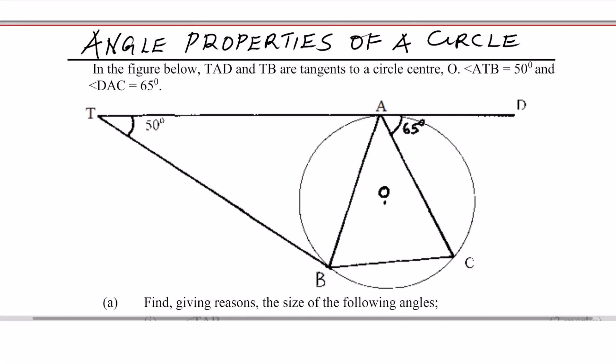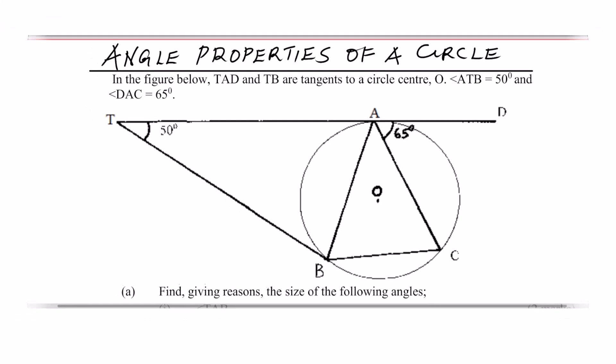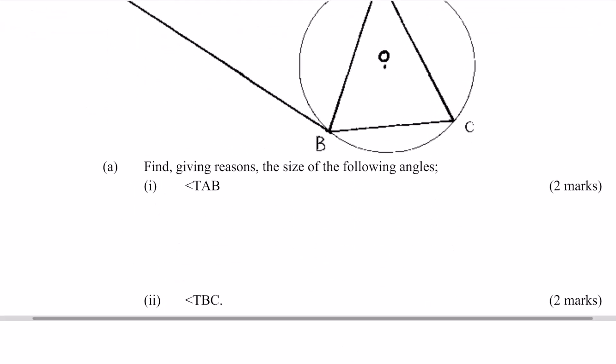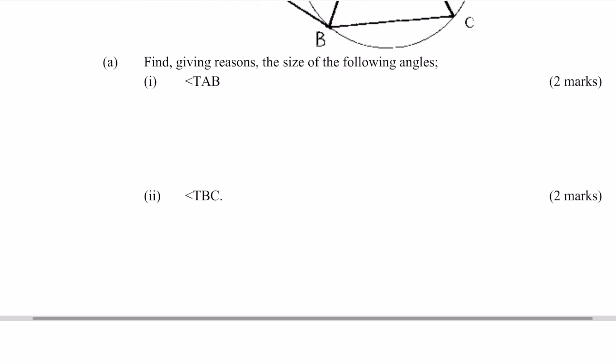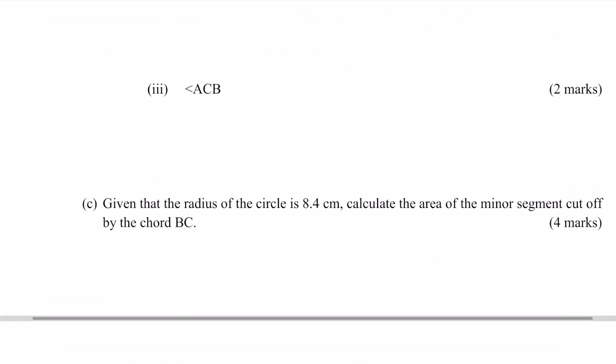Angle properties of a circle. In the figure below, TA and TB are tangents to a circle center O. Angle ATB equals 50 degrees and angle DAC equals 65 degrees. The diagram is shown with all angles indicated. Find, giving reasons, the size of the following angles: angle TAB, angle TBC, angle ACB. Given that the radius of the circle is 8.4 centimeters, calculate the area of the minor segment cut off by chord BC.